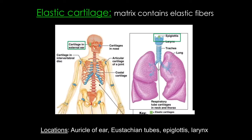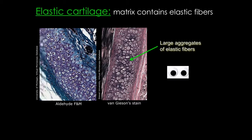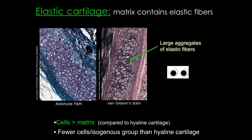Let's move on to our second type of cartilage: elastic cartilage. As the name suggests, this cartilage contains a lot of elastic fibers whose principal protein is elastin. It's found in the epiglottis, the auricle of the ear, the eustachian tubes, and in the larynx — all areas that require flexibility and the ability to bend. Here are examples of elastic cartilage in the ear stained to show the elastic fibers. This cartilage looks somewhat similar to hyaline cartilage but lacks that glossy appearance. It's also more cellular, with more cells compared to matrix, and it has fewer cells per isogenous group than hyaline cartilage.